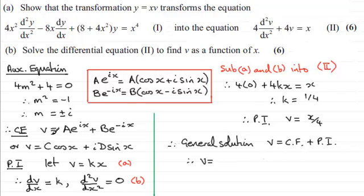We've got v equals, and if we take for the complementary function the first one up here, which was ae^(ix) plus be^(-ix), that's our complementary function, plus the particular integral, which is plus x over 4.